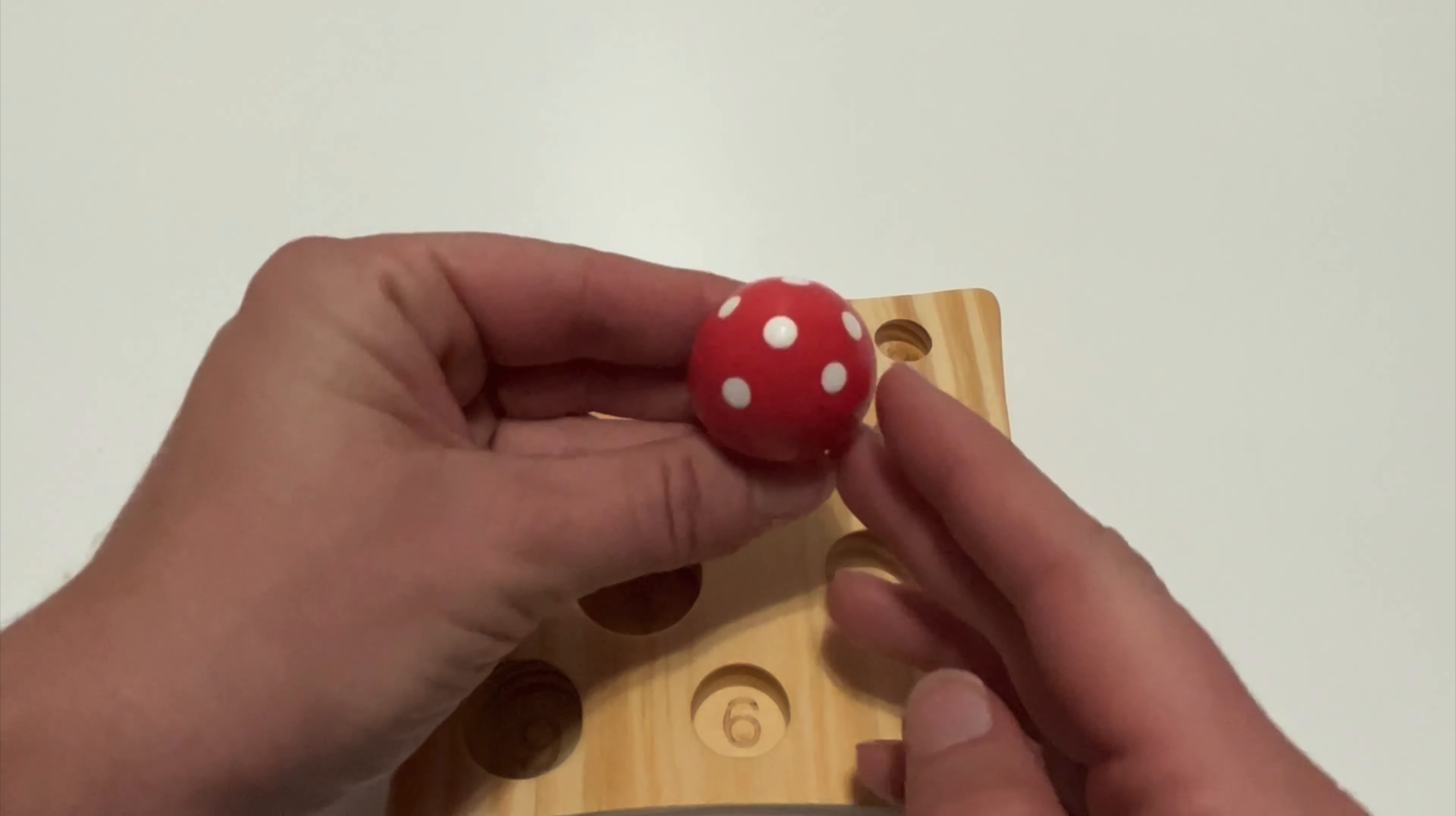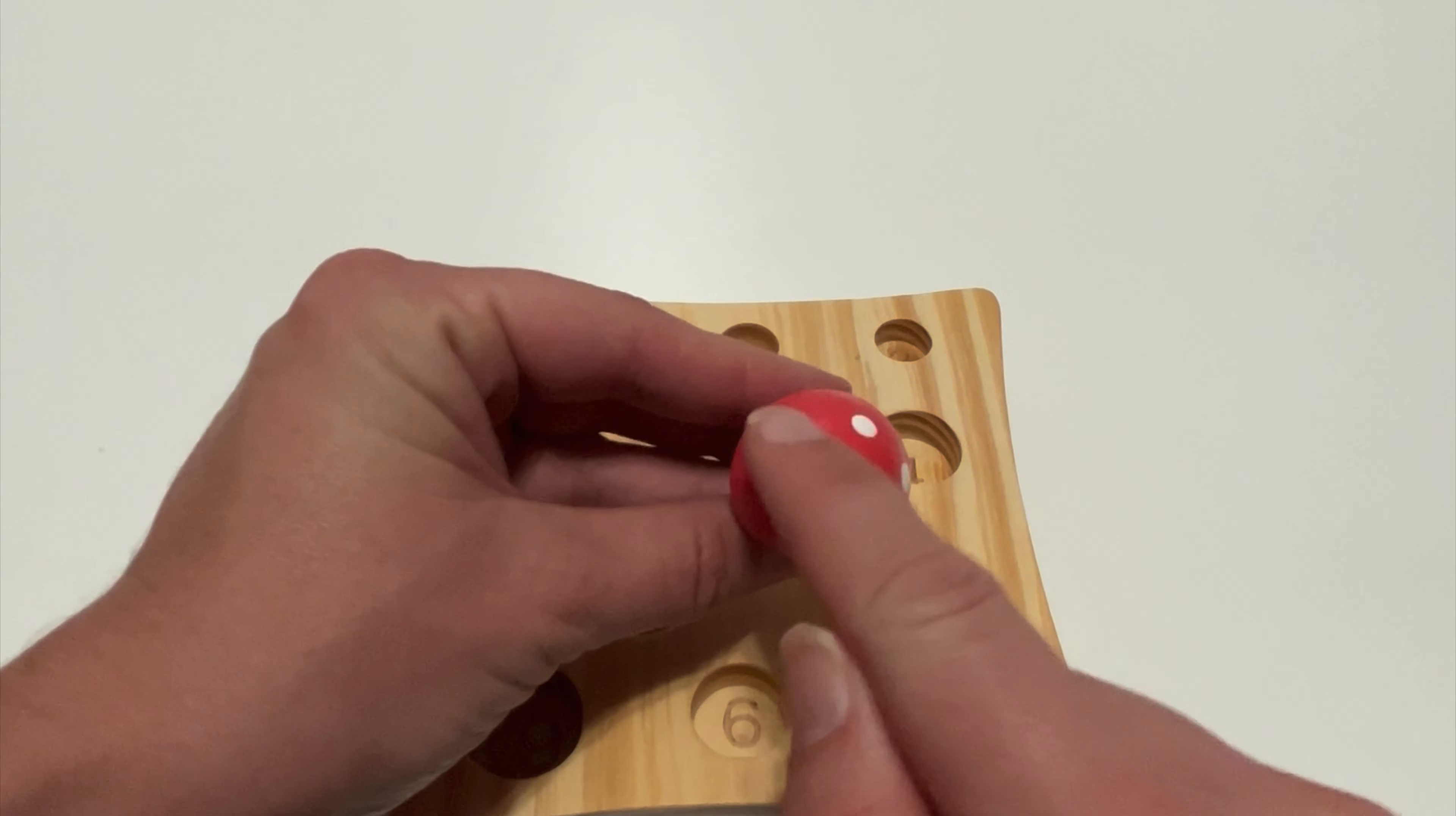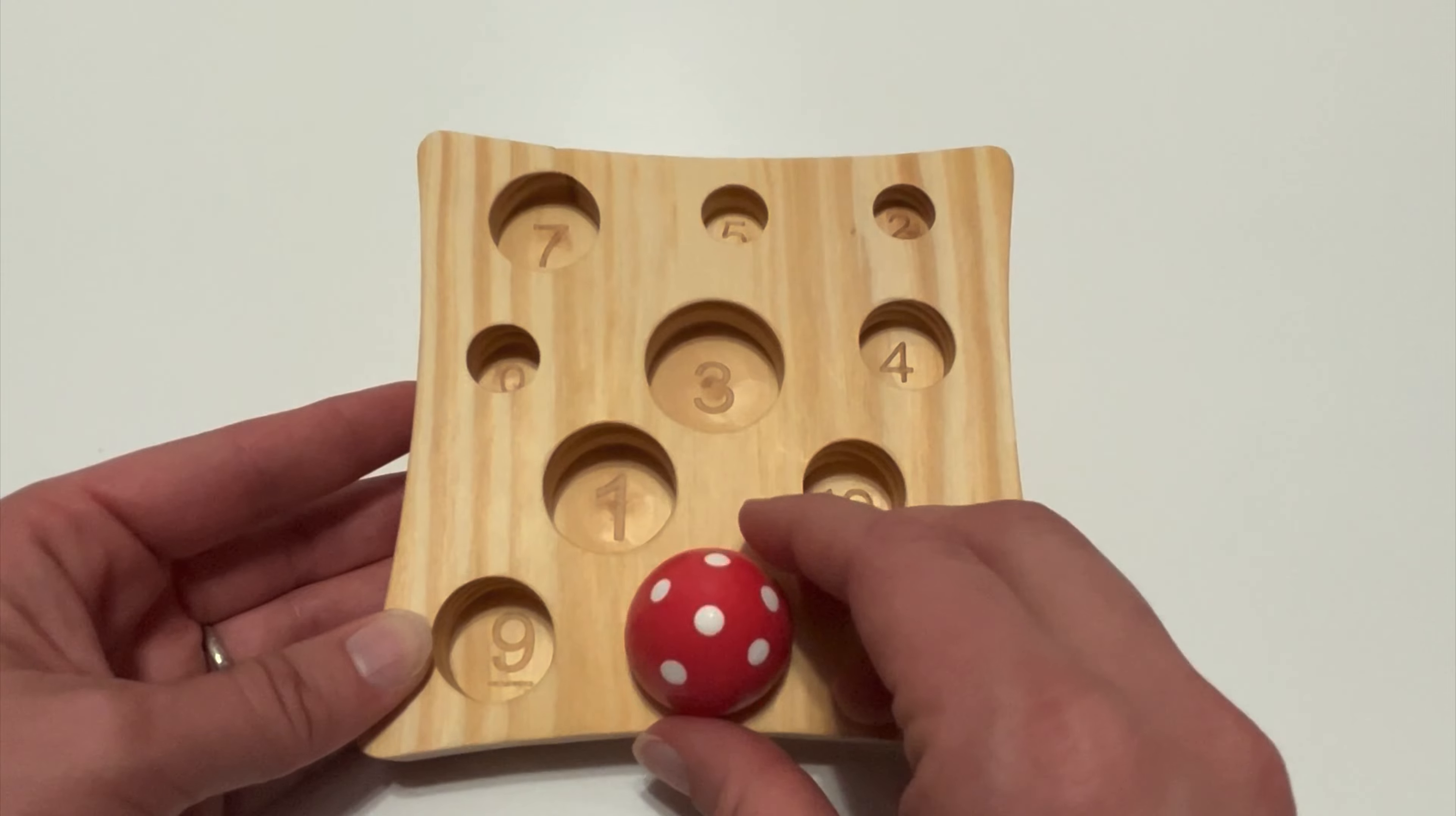How many white circles? Let's count. One, two, three, four, five, six. Where's number six? You did it. Six.